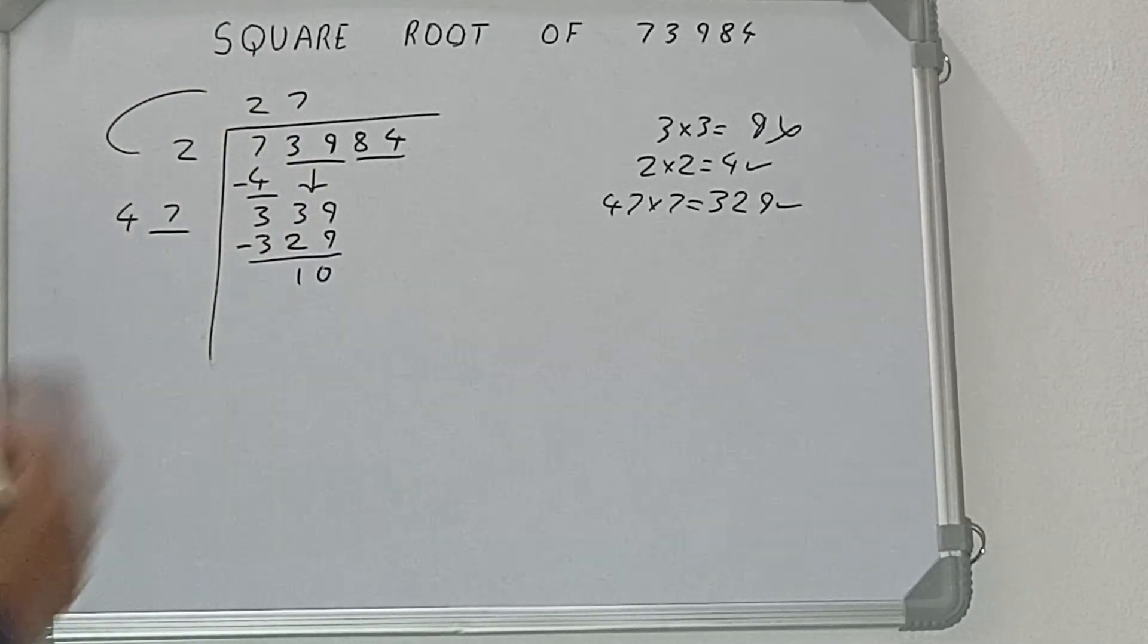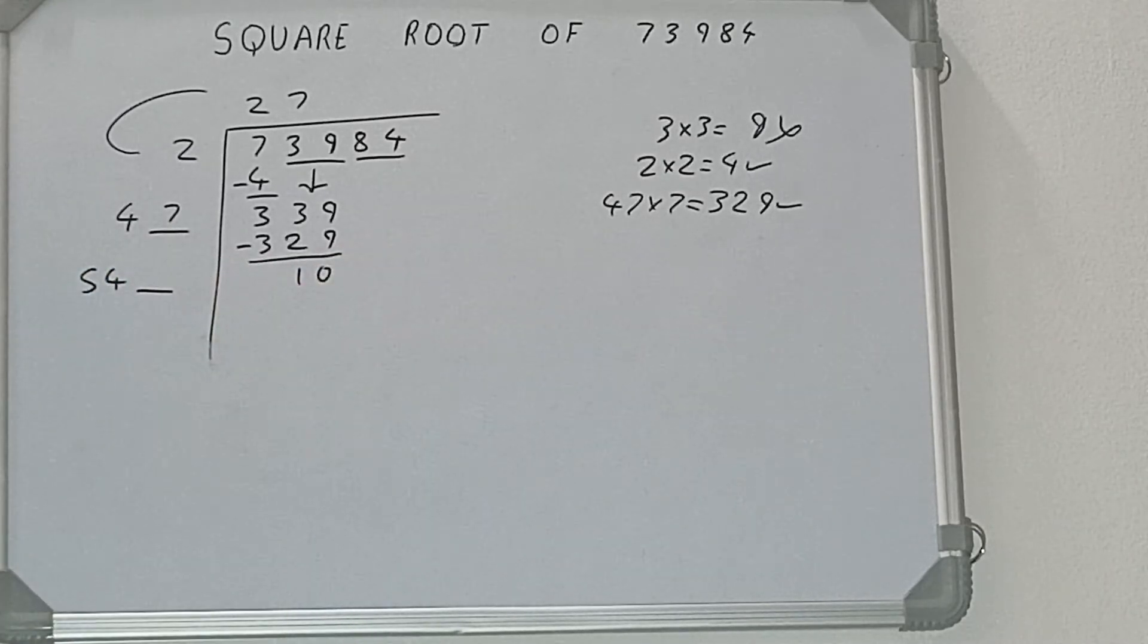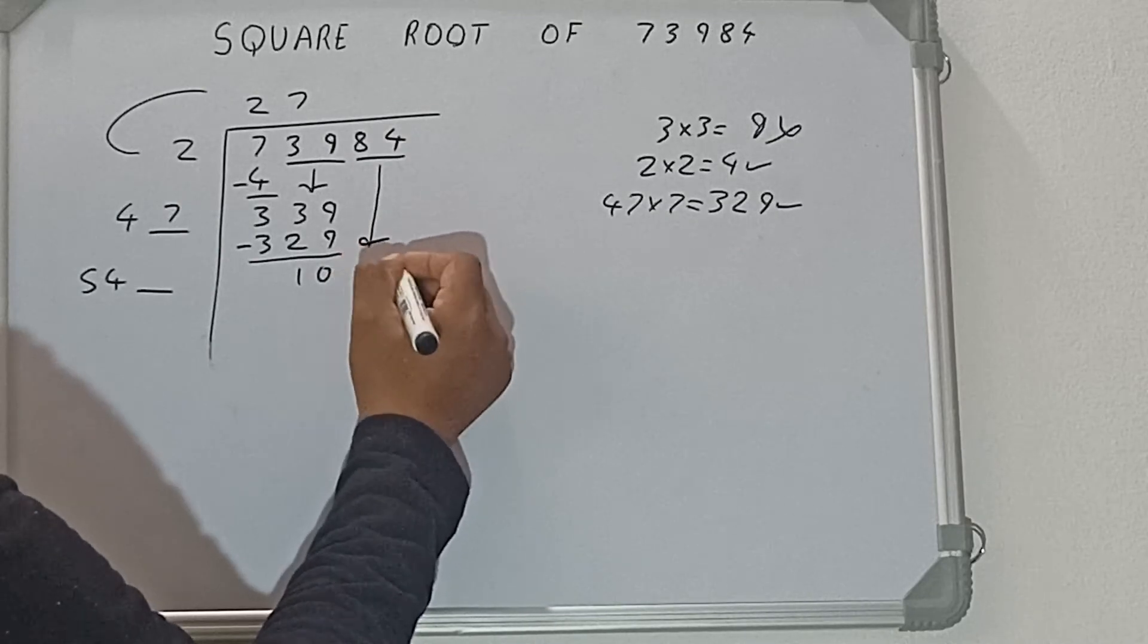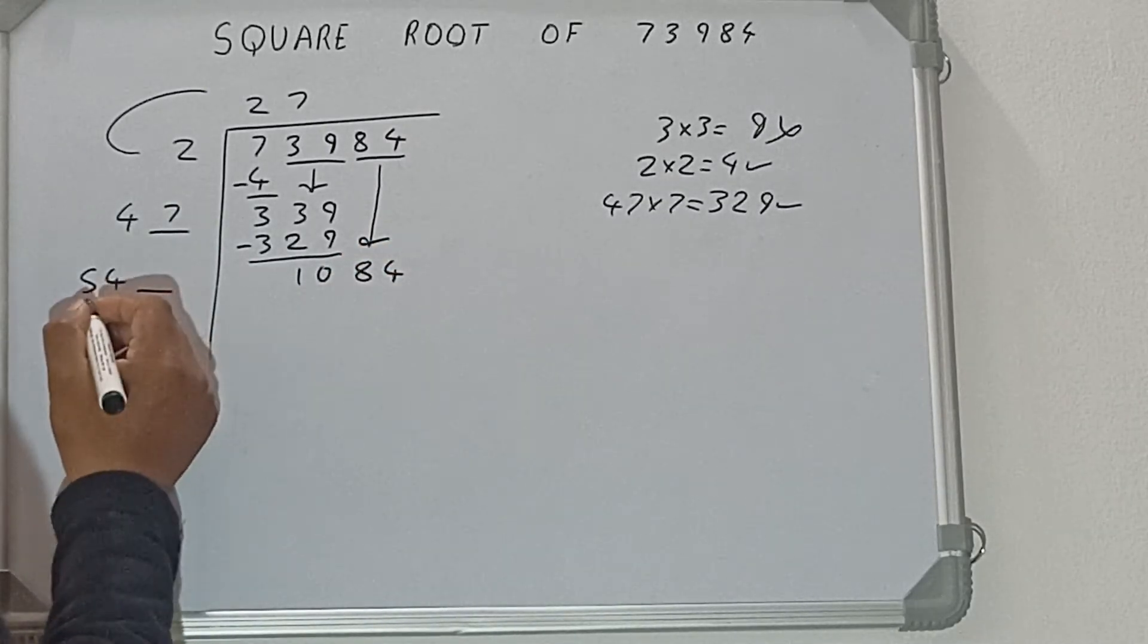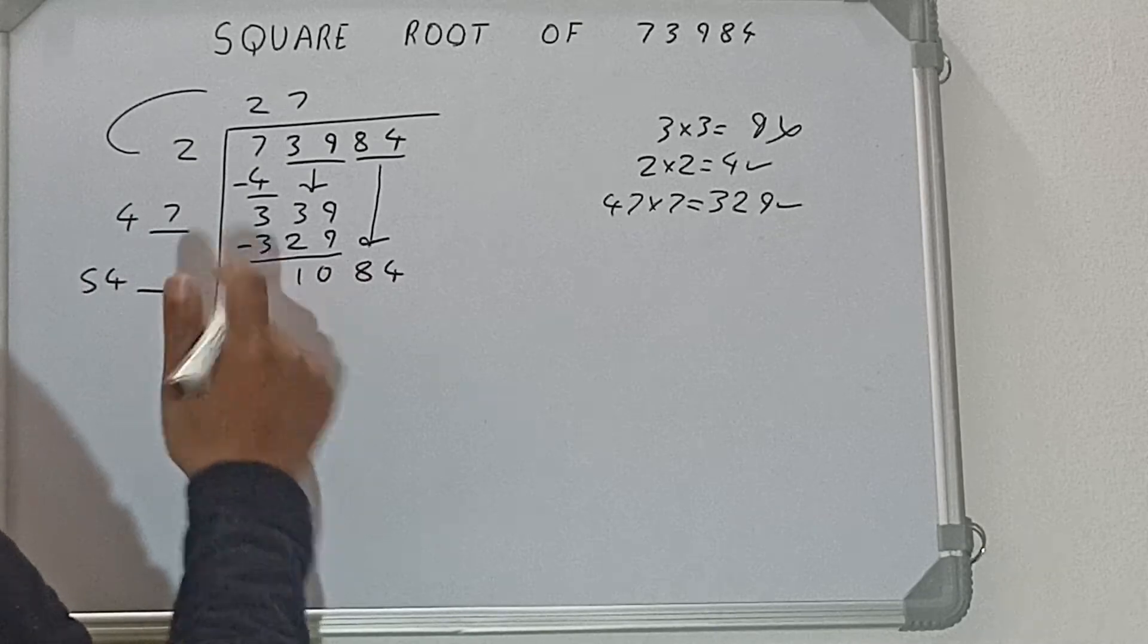So 47 plus 7 will be 54, and keep a digit extra. Now we need to make this number big, so bring the next pair down and it will be 1084. Now if we compare 54 and 108, 54 two times is 108, so we can try 2 times.